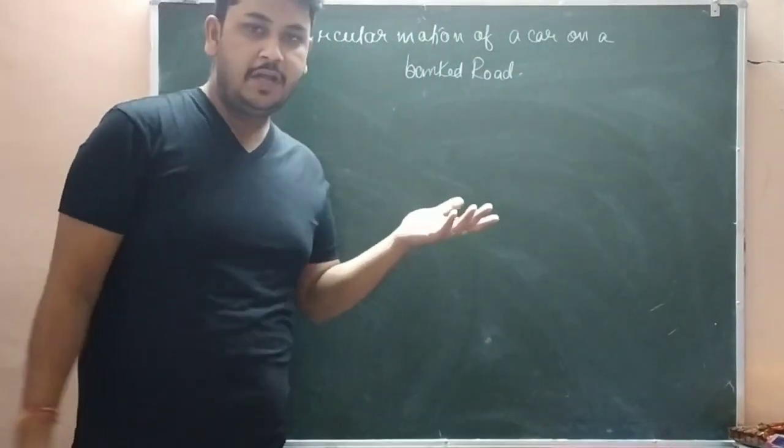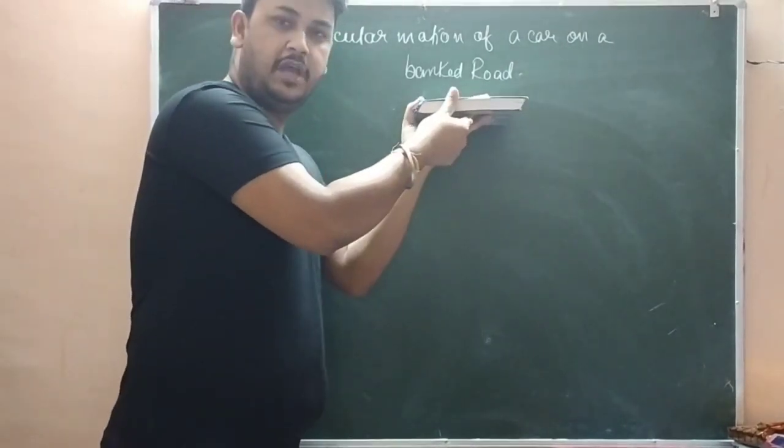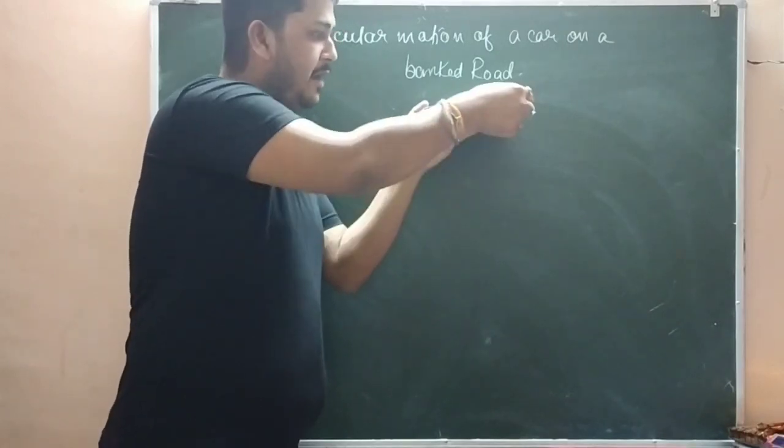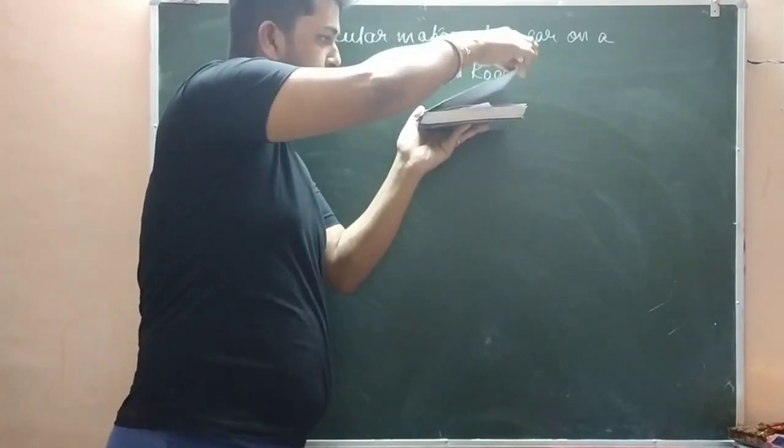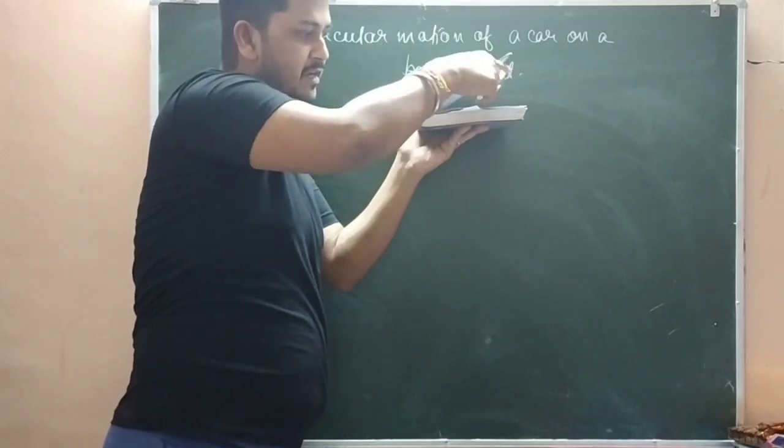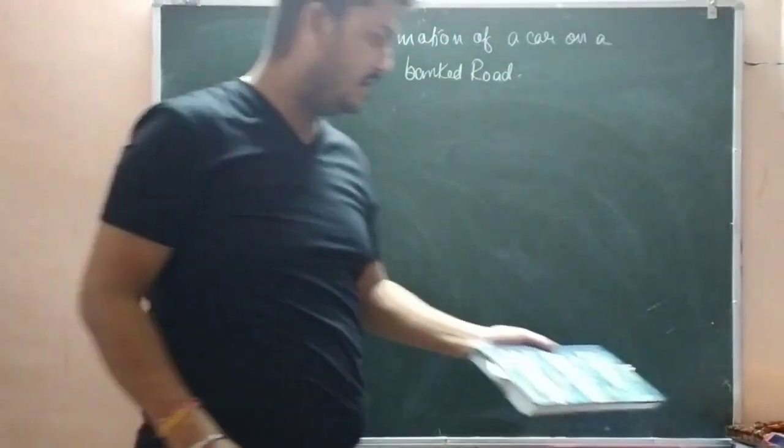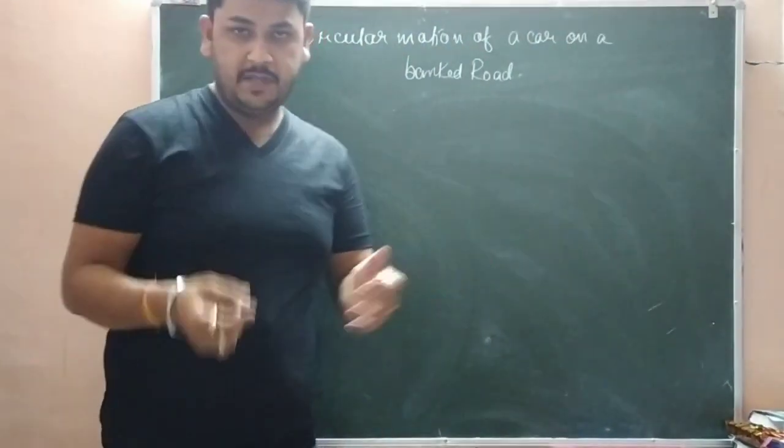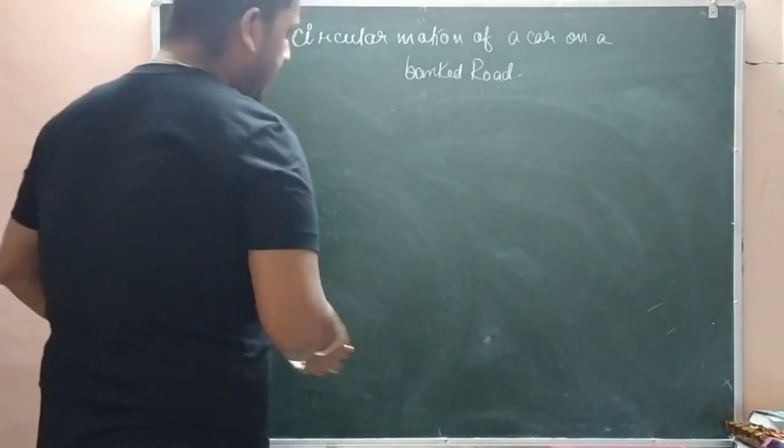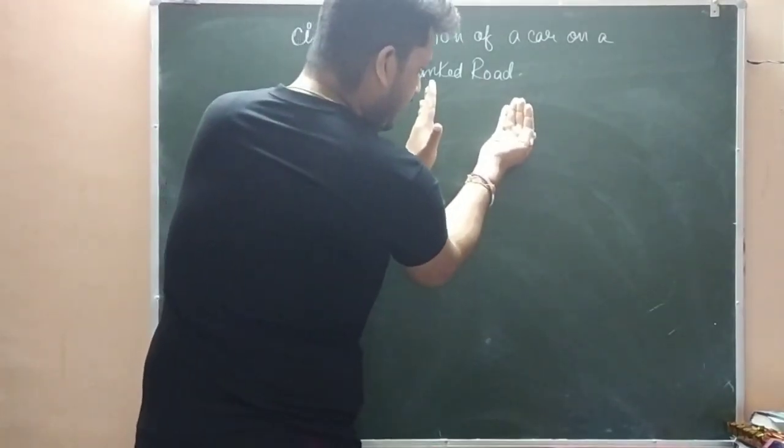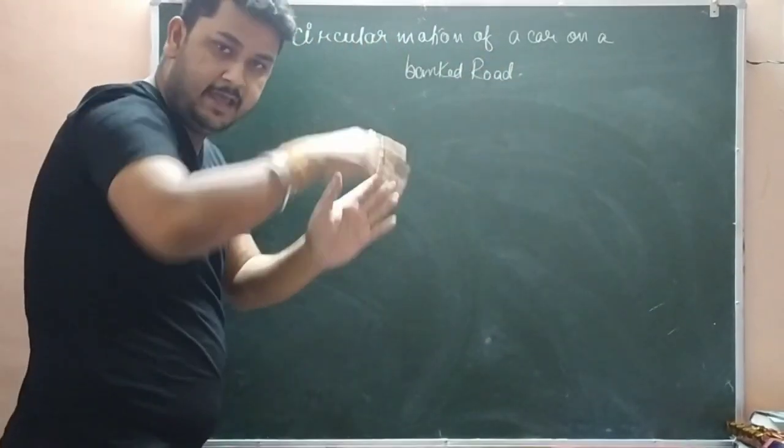This is not a bank road, this is plain road. But now the road is like this - the horizontal is like this, but the road is inclined. So when the car is on this incline, we need a three-dimensional diagram.